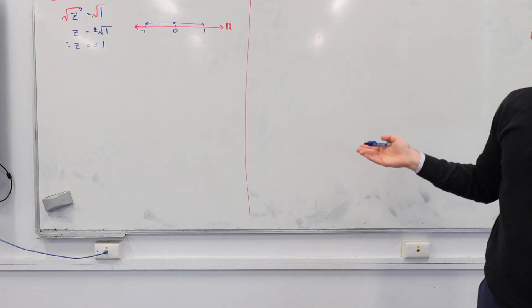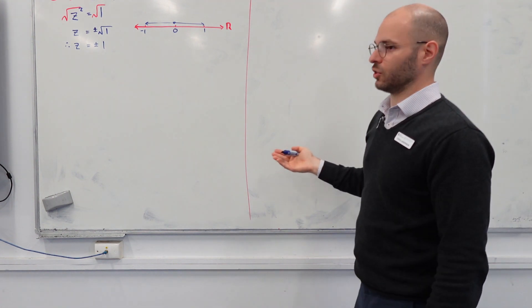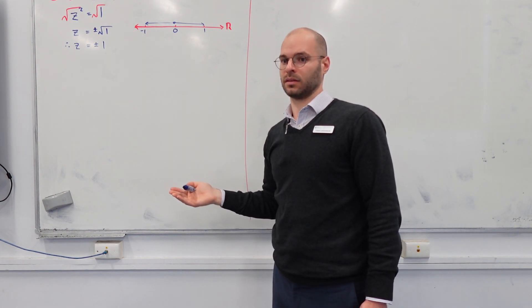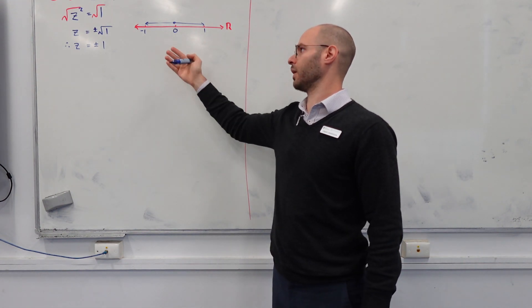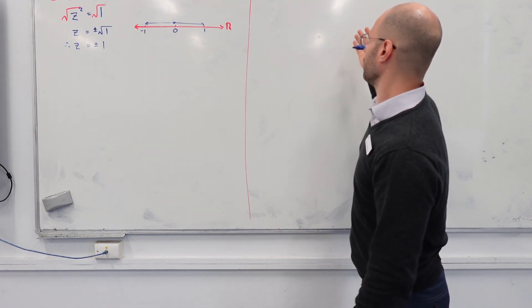Typically speaking, when we're looking at square rooting a number, how many solutions do we expect to see? Two. So square root, we expect to see at least two solutions.